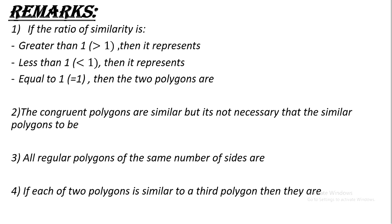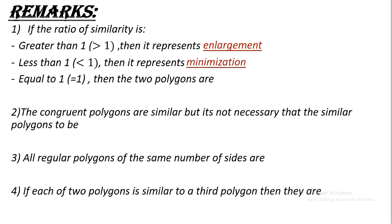Now we have some remarks. Number one: if the ratio of similarity is greater than one, then it represents enlargement. Number two: if the ratio of similarity is less than one, then it represents minimization. Number three: if the ratio of similarity is equal to one, then the two polygons are congruent.